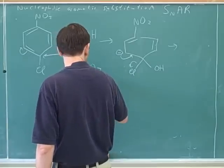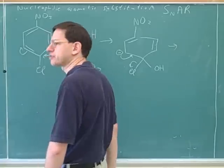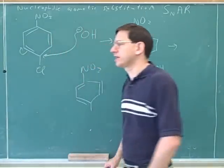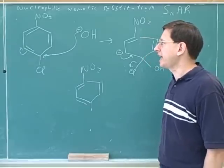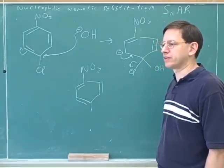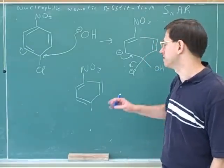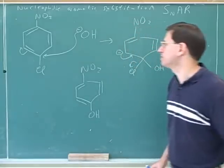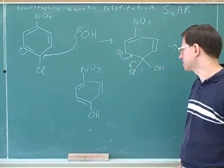So if the chlorine was meta to the NO2, this wouldn't work? That's right. You would get basically no reaction. That's actually something you're likely to be tested on. When can you and when can't you do the nucleophilic aromatic substitution? So before we finish this, we'll review all the things that we need. But yeah, the leaving group must be ortho or para in order for this to work.